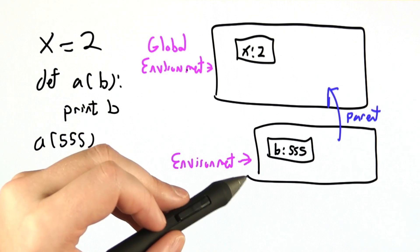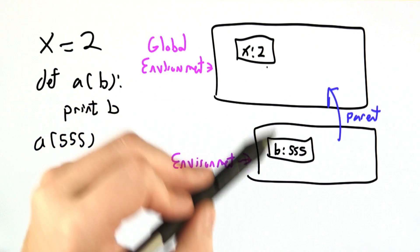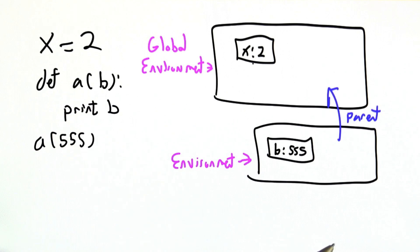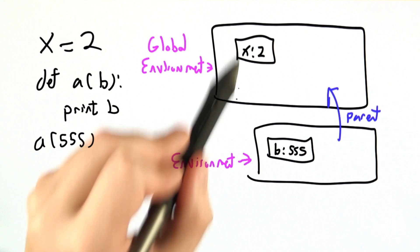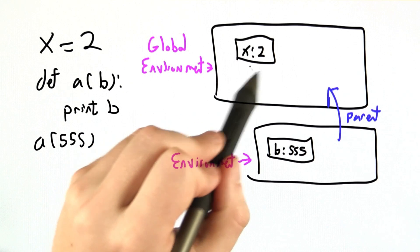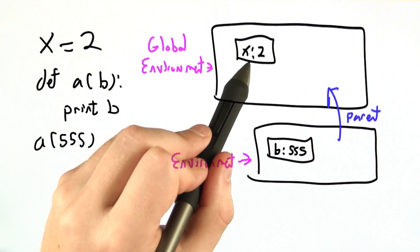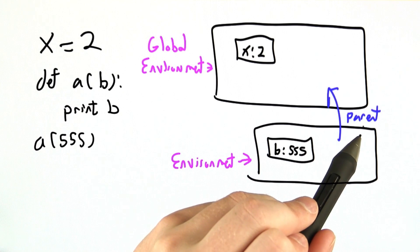When we're interpreting JavaScript, we're going to use this nested or chained notion of environments to keep track of the values of variables. An environment is just a mapping from variable names to values, except environments may also have parent pointers.